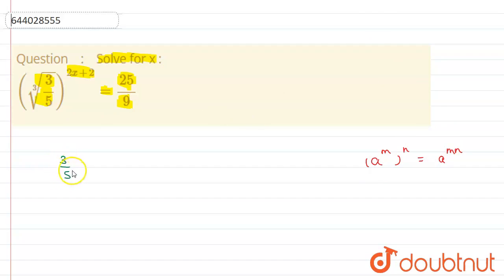(3/5) to the whole power 1/3 multiplied by (2x+2). When applying this property, I can write this equal to 25/9.